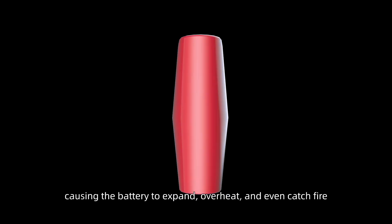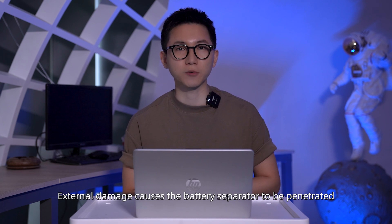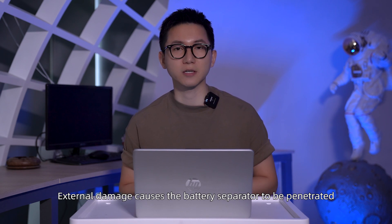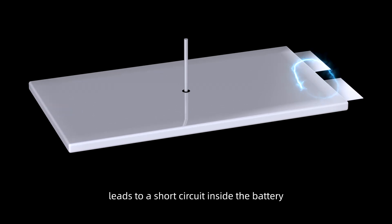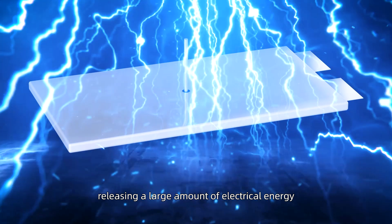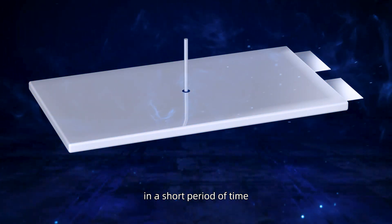Second, external damage causes the battery separator to be penetrated, and direct contact between the positive and negative poles leads to a short circuit inside the battery, releasing a large amount of electrical energy in a short period of time, leading to thermal runaway of the battery.